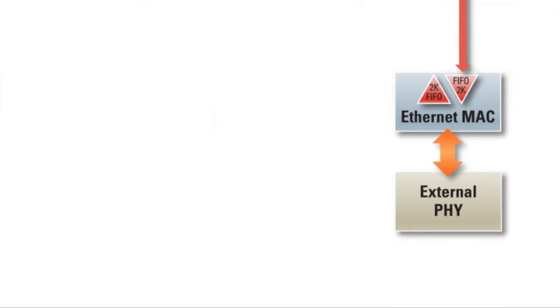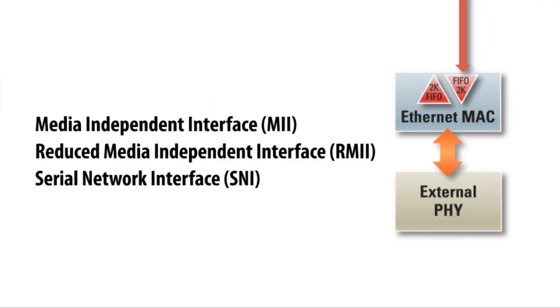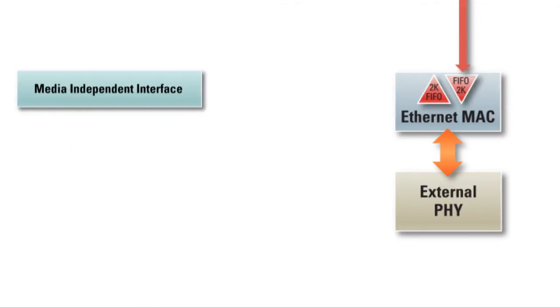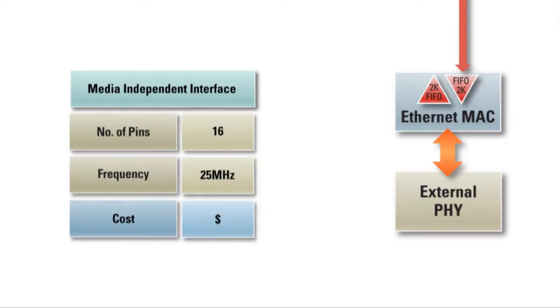Having an external PHY offers great flexibility. There are different standard interfaces used to connect the PHY and MAC, and RX supports the two most popular, giving you even more choices. The Media Independent Interface, or MII, is the most popular standard interface used to connect a MAC block to a PHY chip. MII uses 16 pins and has a signal frequency of 25 MHz, and there are many low-cost MII PHYs available.